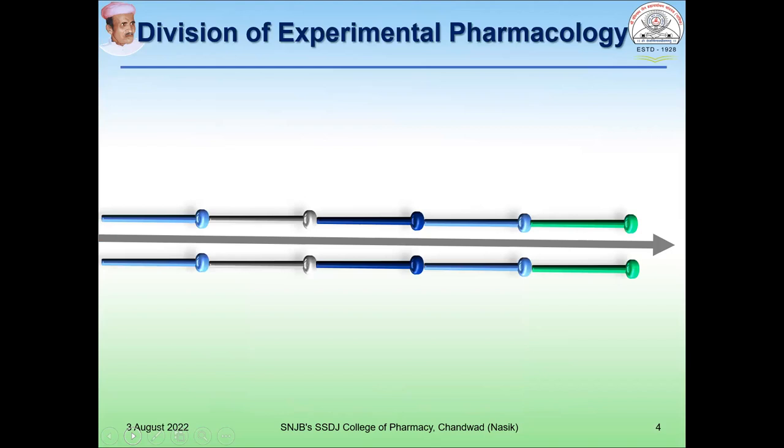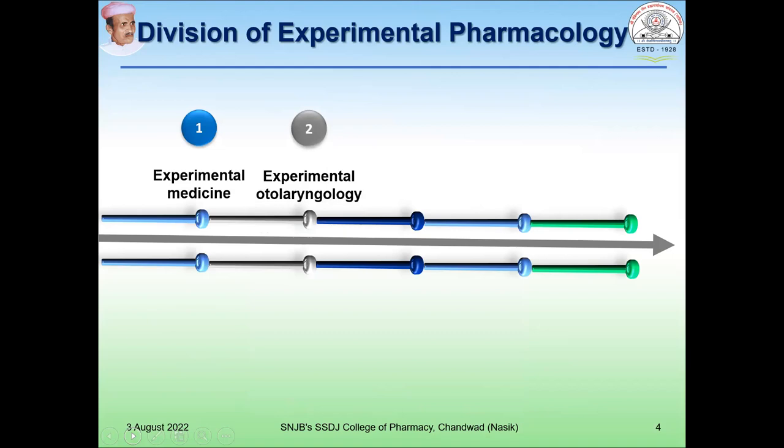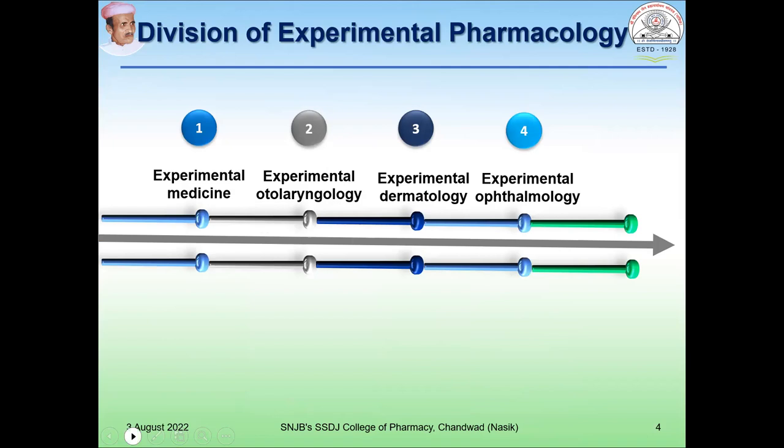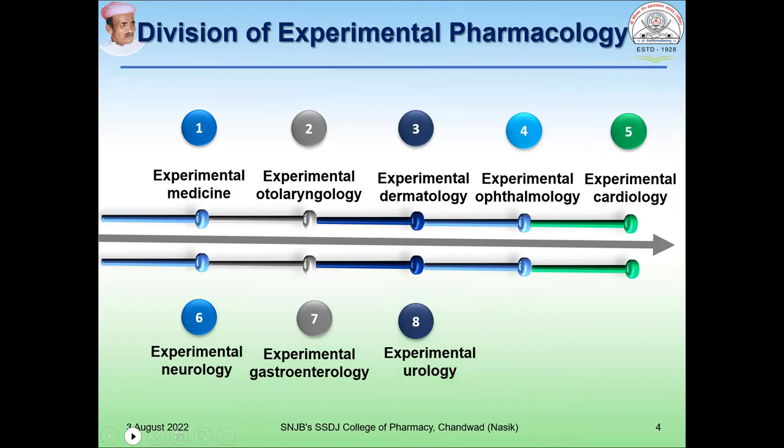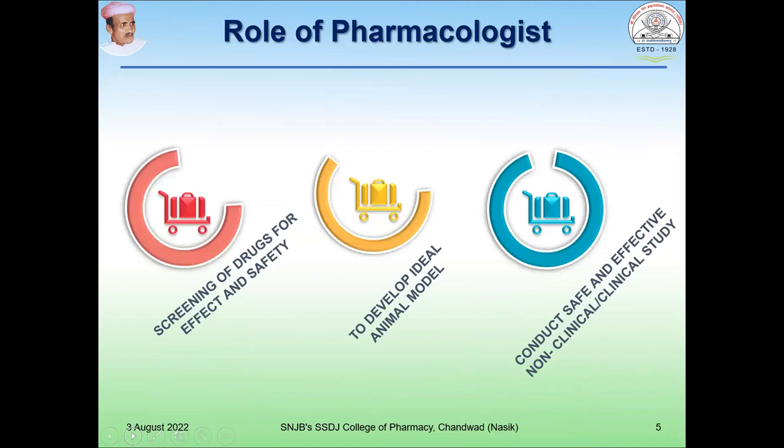There are divisions of experimental pharmacology such as experimental medicine, experimental otolaryngology, experimental dermatology, experimental ophthalmology, experimental cardiology, experimental neurology, experimental gastroenterology, experimental urology, experimental respiratory, and other allied experimental studies.